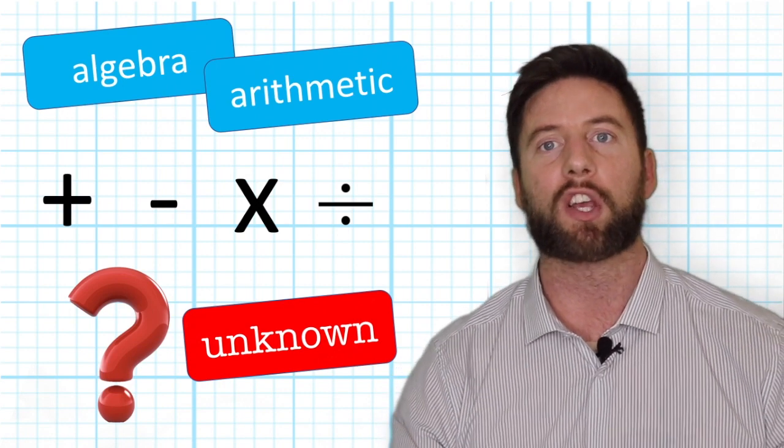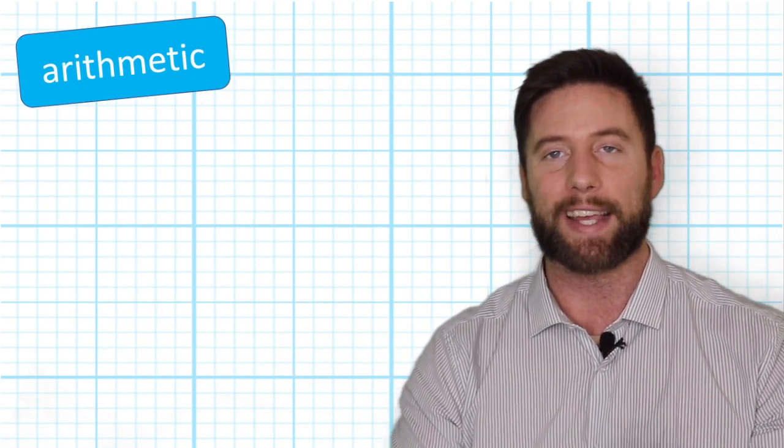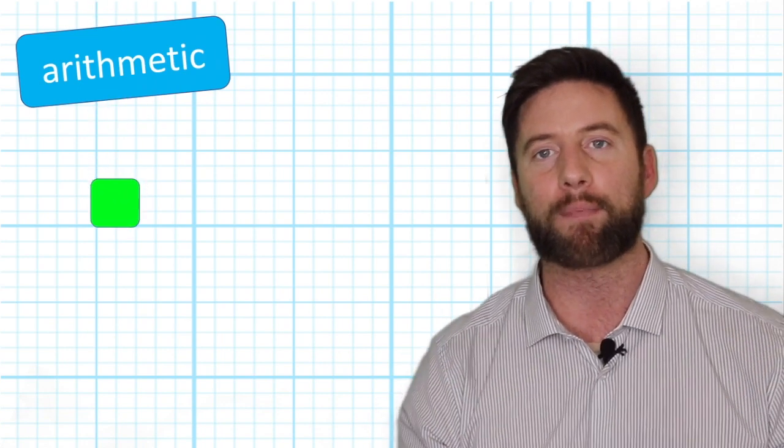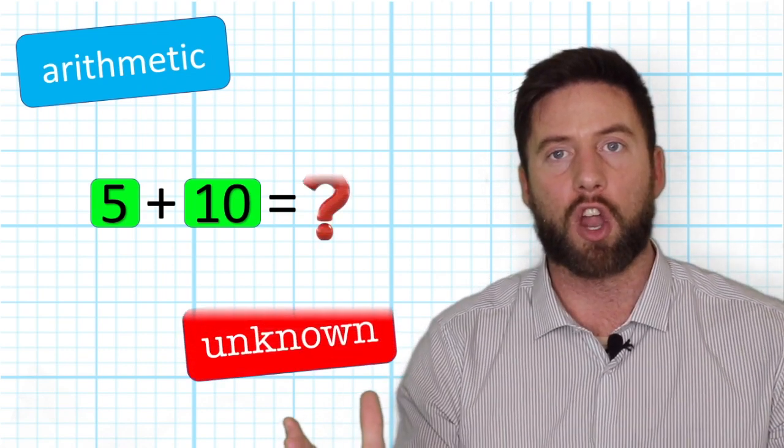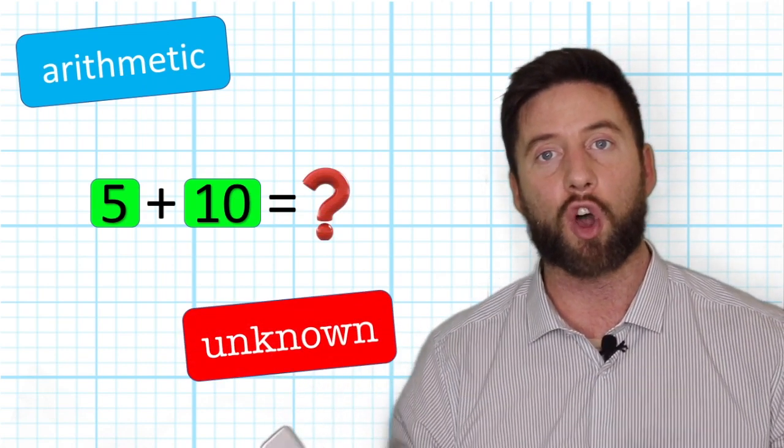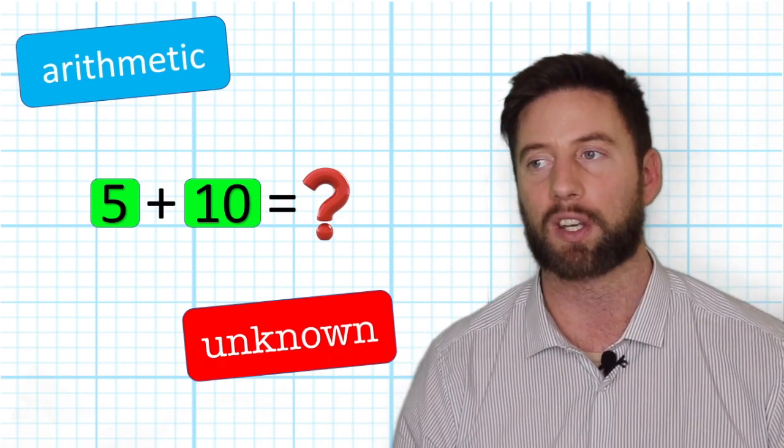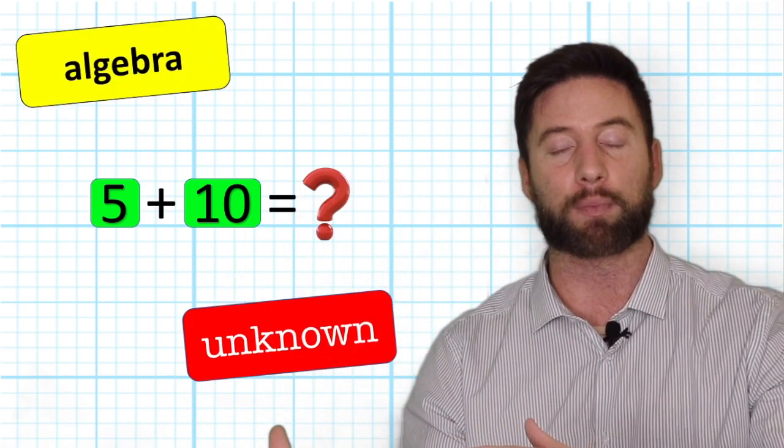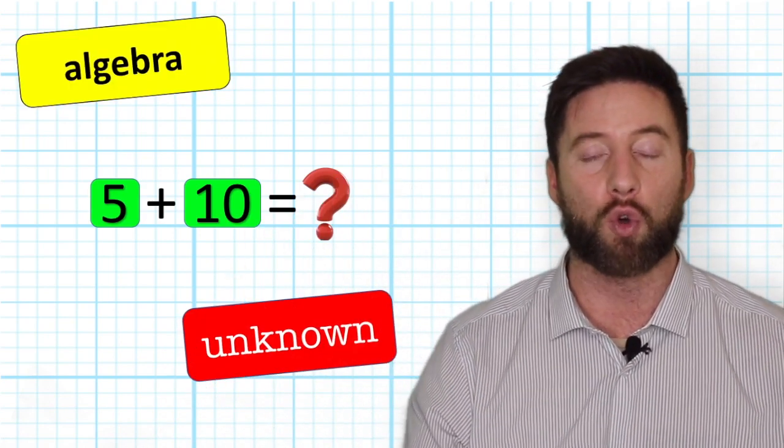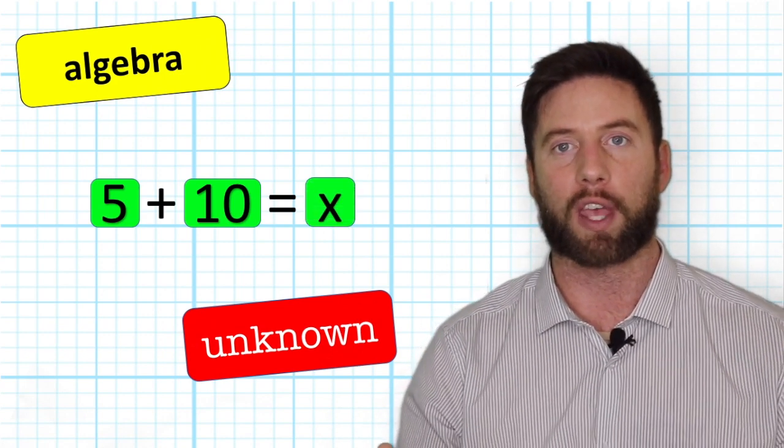When you are first looking at arithmetic, the only area that's unknown is the answer. So if we look at a very basic one, 5 + 10 equals unknown. The answer is not known until we complete our question. A very important difference between arithmetic and algebra is when we have an unknown in algebra, we use a symbol.